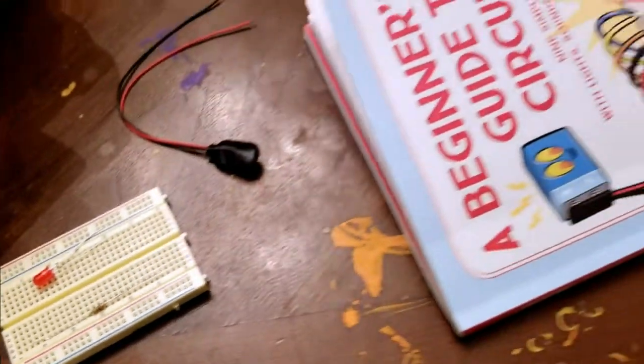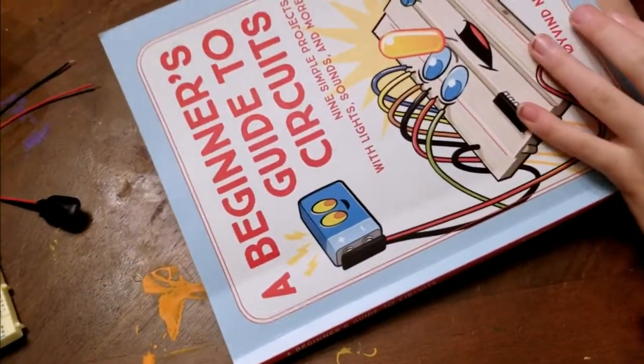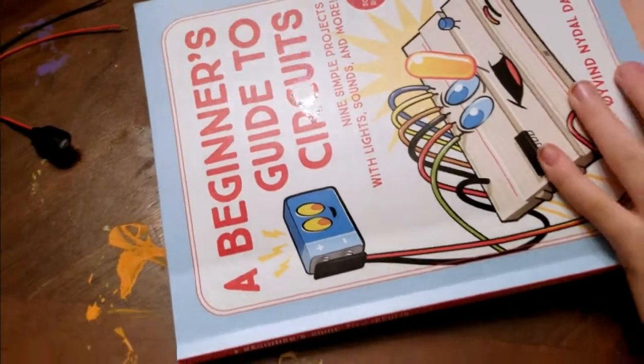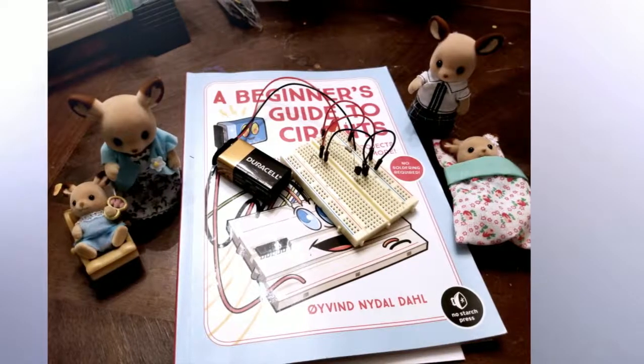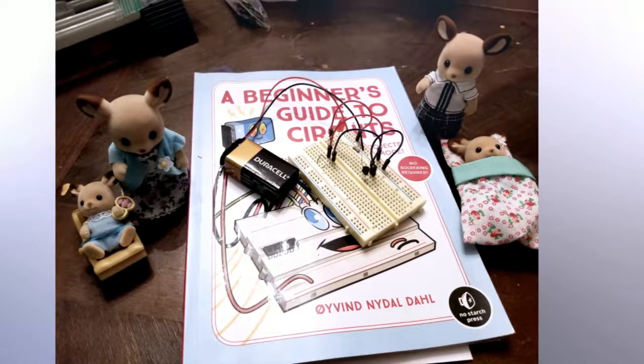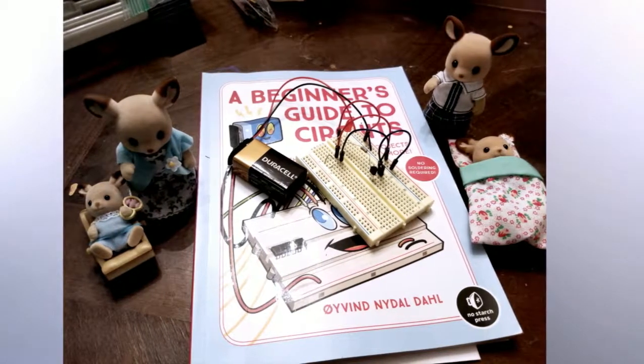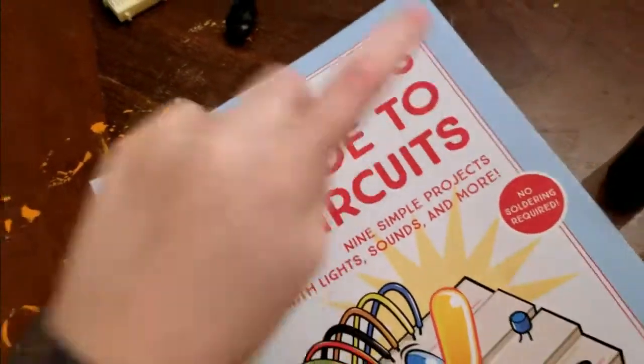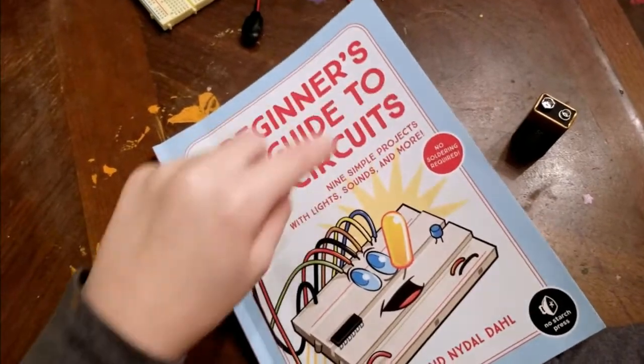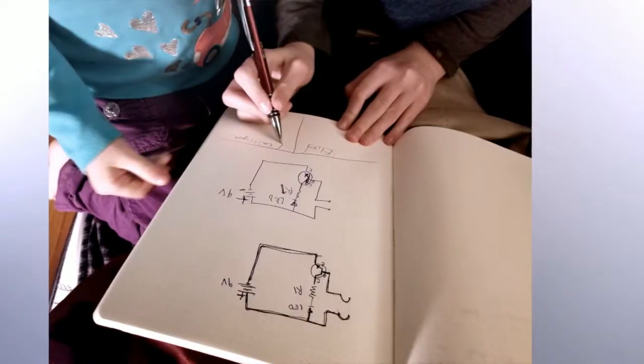Hello, Crazy Daisy fans. Would you like us to build a circuit today? This book is called A Beginner's Guide to Circuits: Nine simple projects with lights, sounds, and more.